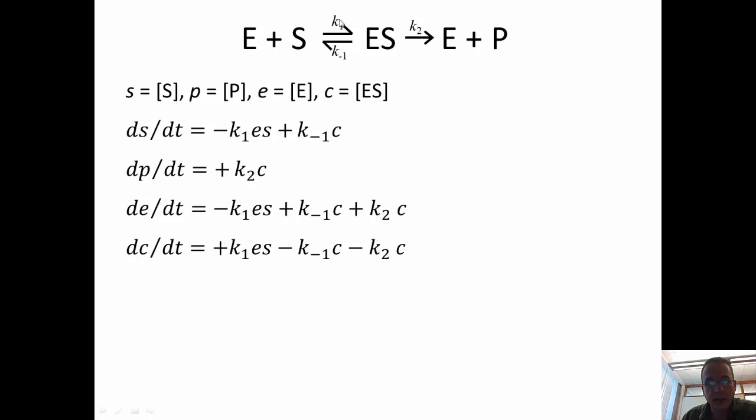And so the rate of disappearance is this rate constant, following the law of mass action, K1 times e times s, and the rate of appearance of S is K minus 1 times the concentration of the complex c.